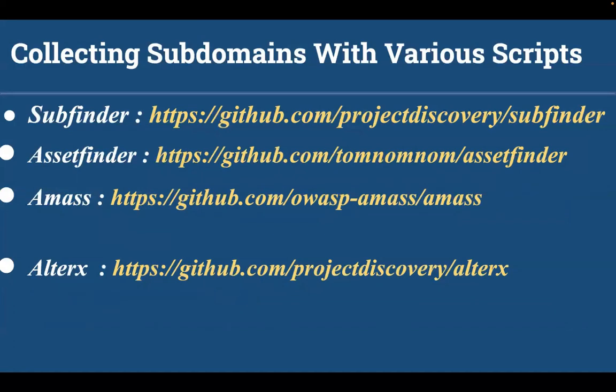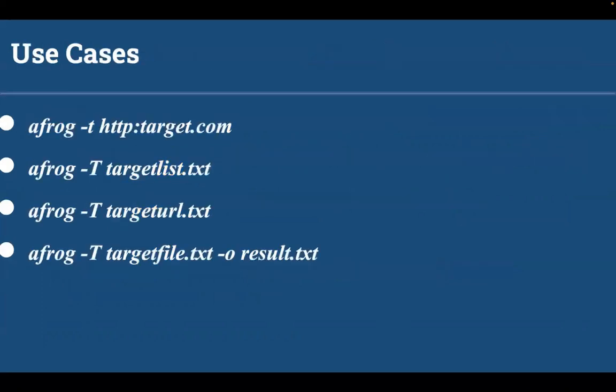After collecting the domains, we run AFROG on our target file. Here is the usage: specify the -t flag for a single domain, or the -T flag if you have a target list of multiple domains. If you have a URL file you can also specify -T, and if you want to store the results, specify the -o flag.